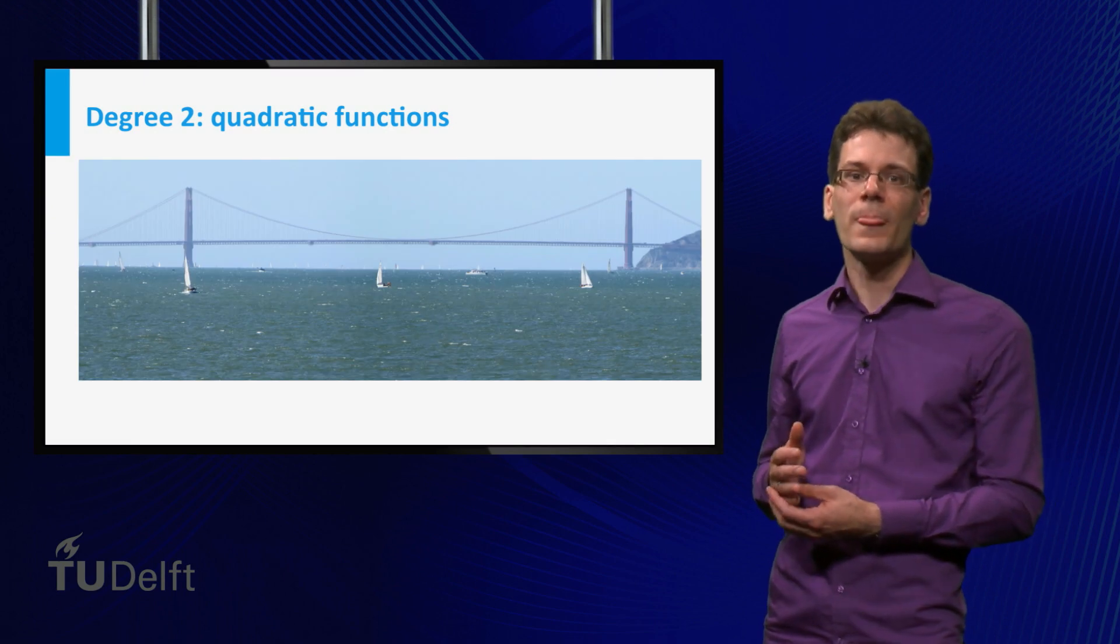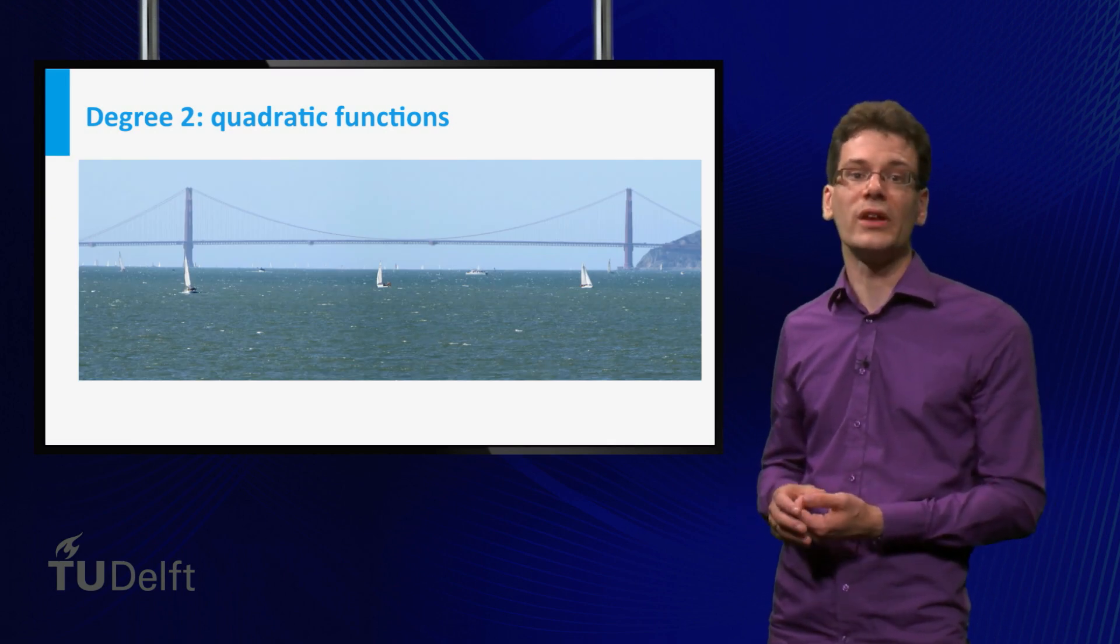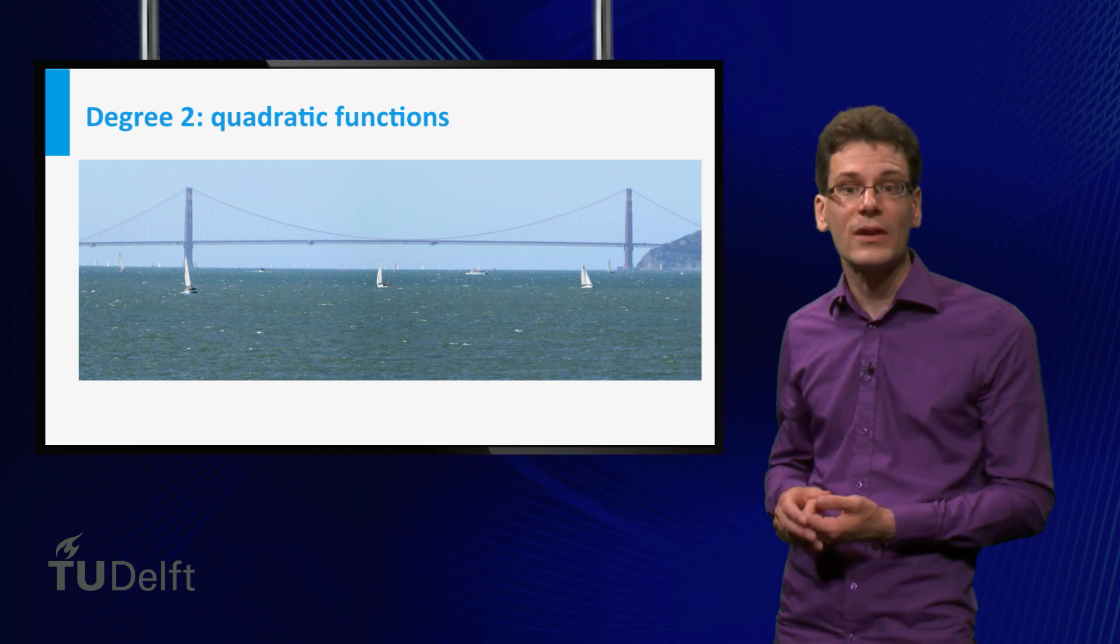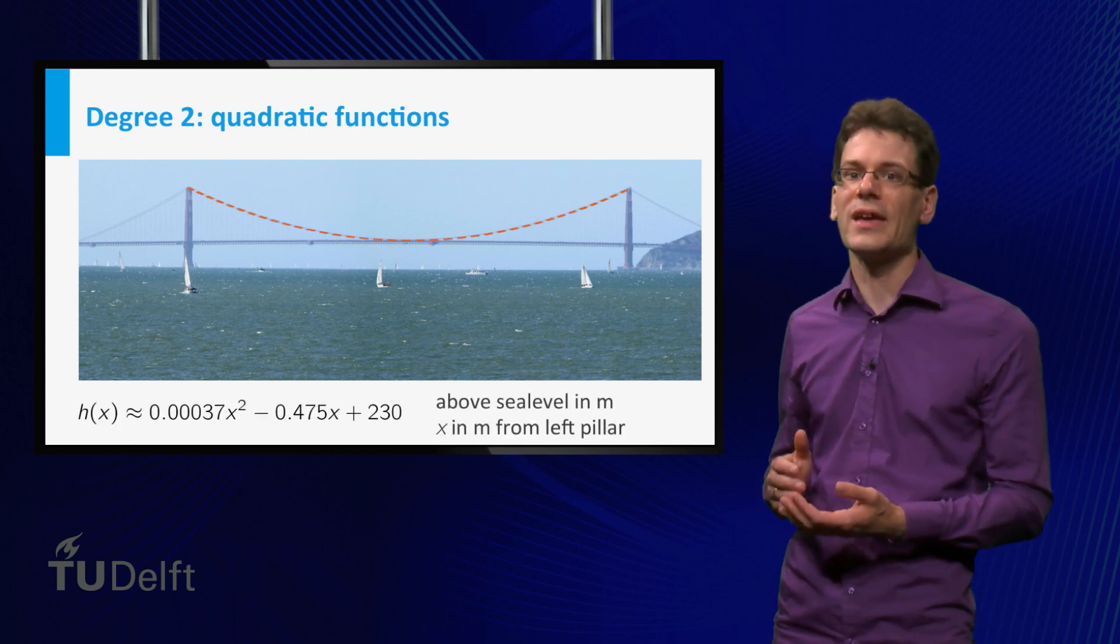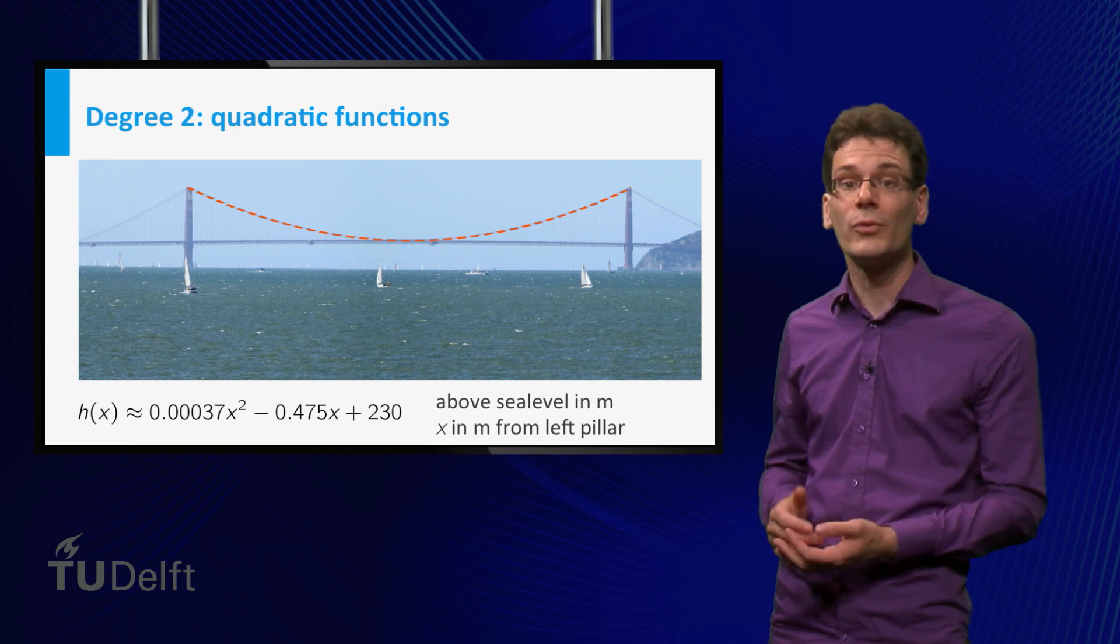A very different example is the main cable of a suspension bridge, such as the Golden Gate Bridge in San Francisco. In many cases, the shape of these cables can be approximated by a quadratic function.